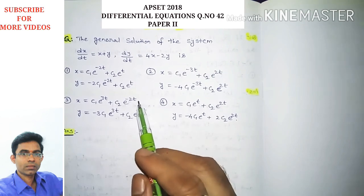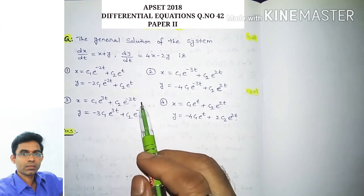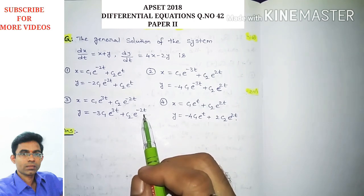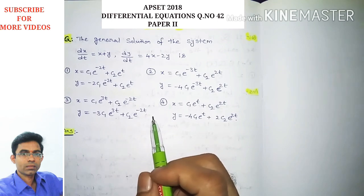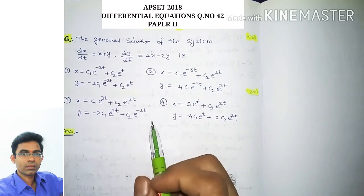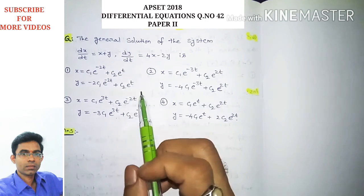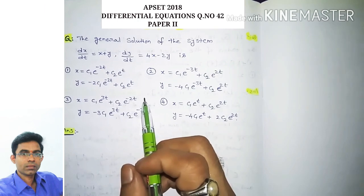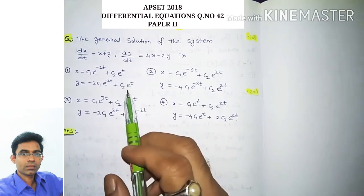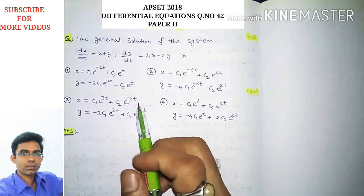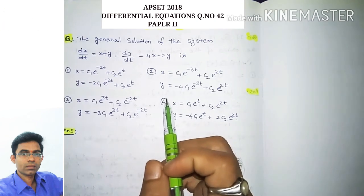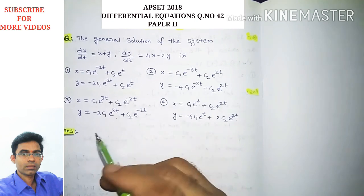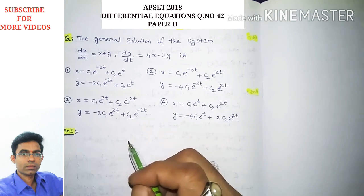This question is regarding differential equations — specifically simultaneous linear differential equations with constant coefficients. We have two dependent variables, x and y, and one independent variable t. We will use the method of operators.